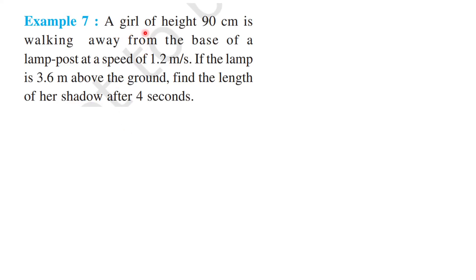A girl of height 90 centimeters is walking away from the base of a lamp post at a speed of 1.2 meters per second. If the lamp is 3.6 meters above the ground, find the length of her shadow after four seconds. Given that the lamp post height is 3.6 meters and the girl's height is 0.9 meters (90 centimeters).